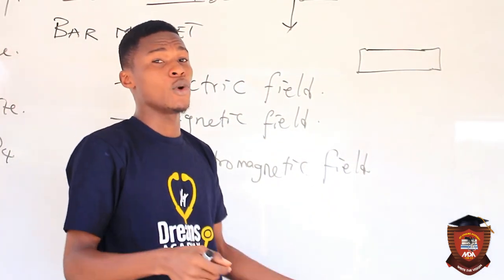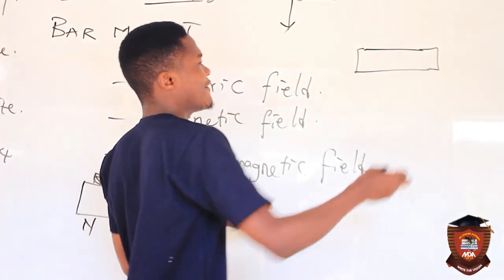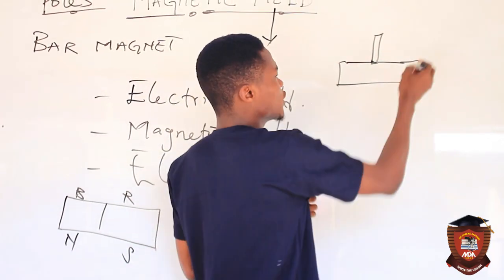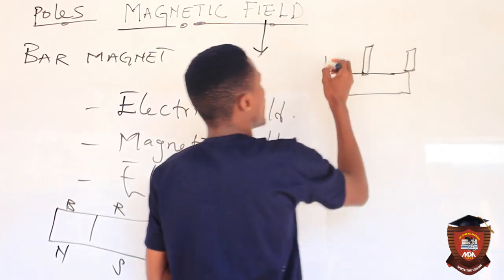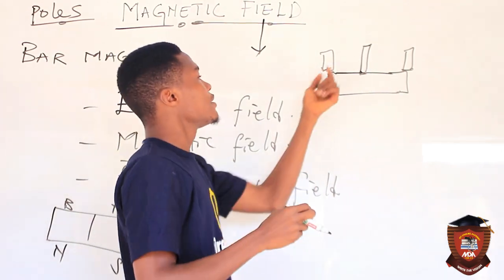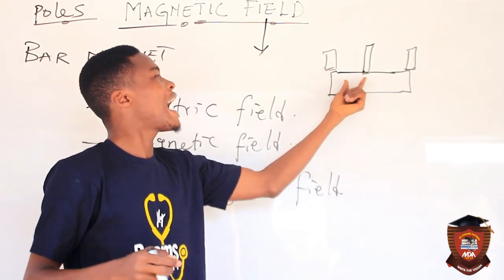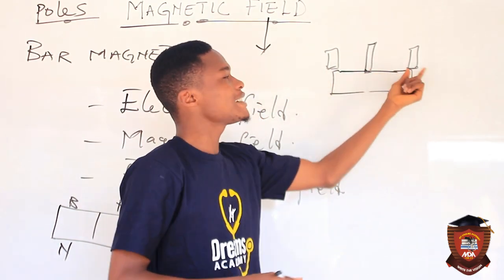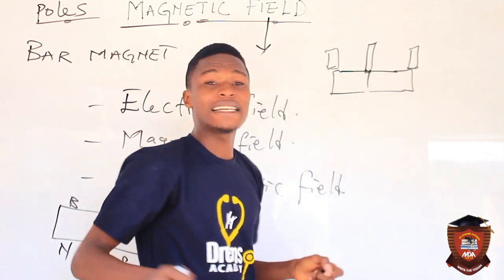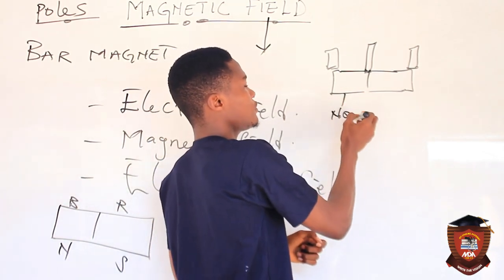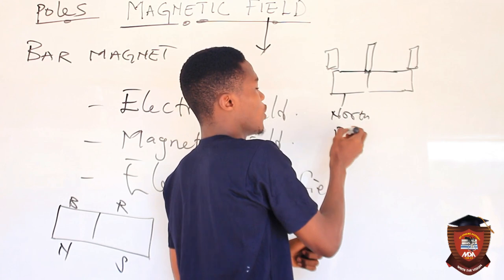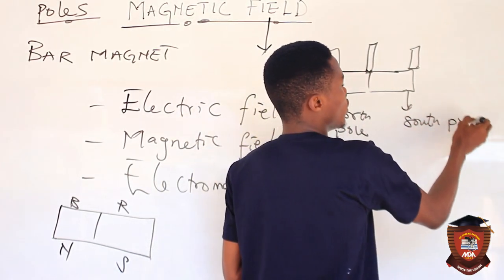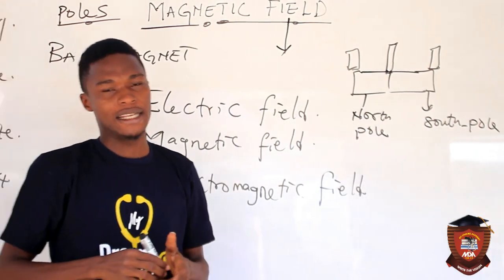If I have a bar magnet and bring iron close to it, I will notice that the magnetism felt at the edges is greater than at the center. So at the edges we have what we call the poles. Basically, magnets have two poles: the north pole and the south pole.